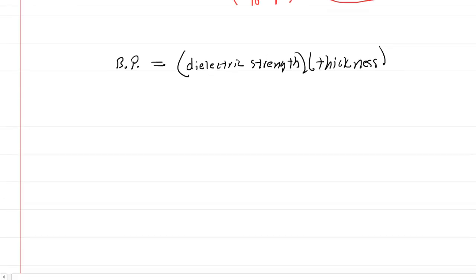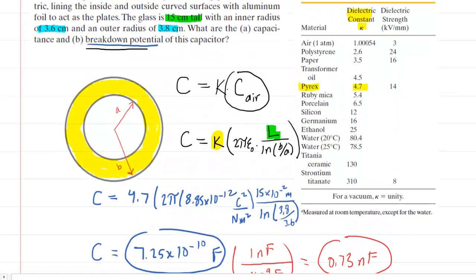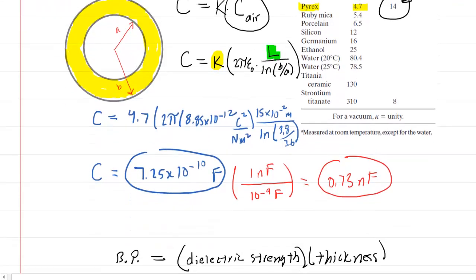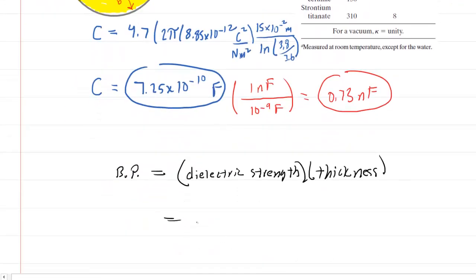The dielectric strength for Pyrex was given in this table. We can see that dielectric strength measured in kilovolts per millimeter for Pyrex has a value of 14. The unit, if you look back at the table, was 14 kilovolts per millimeter.